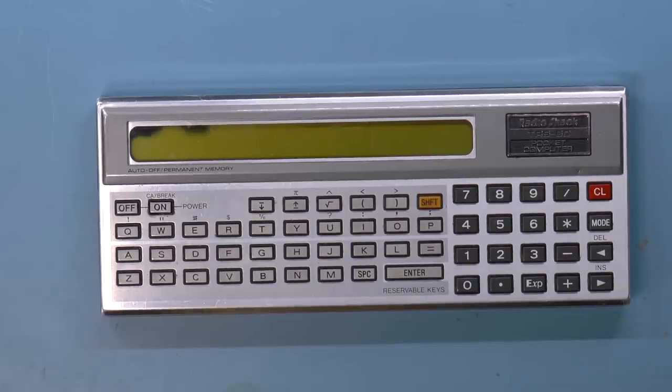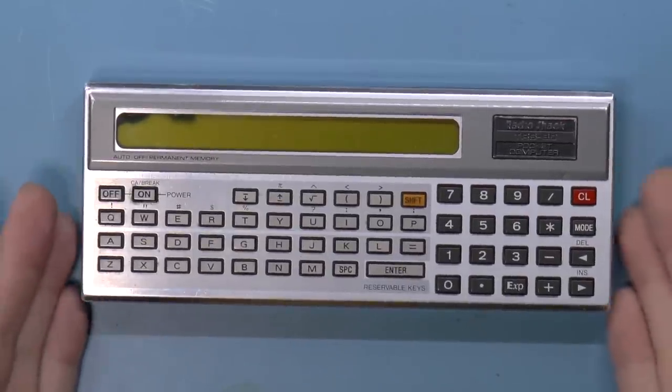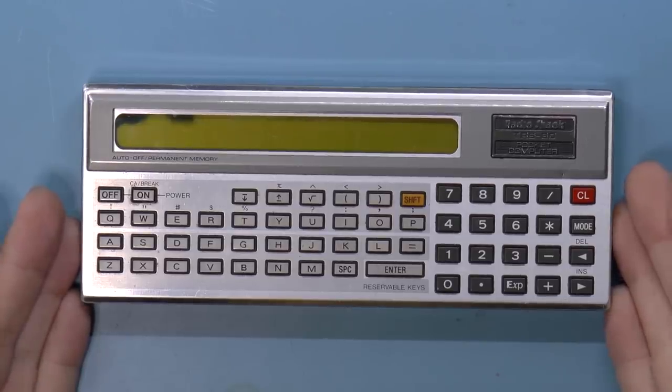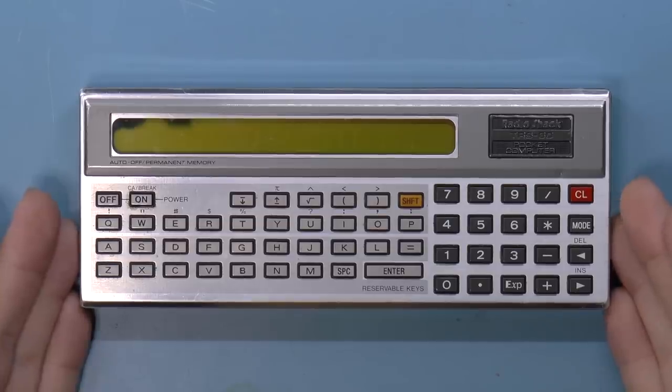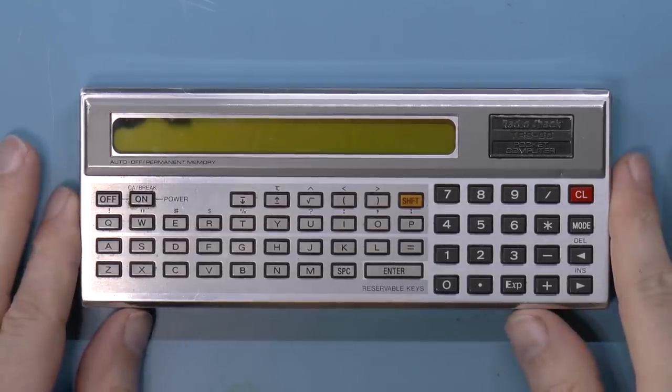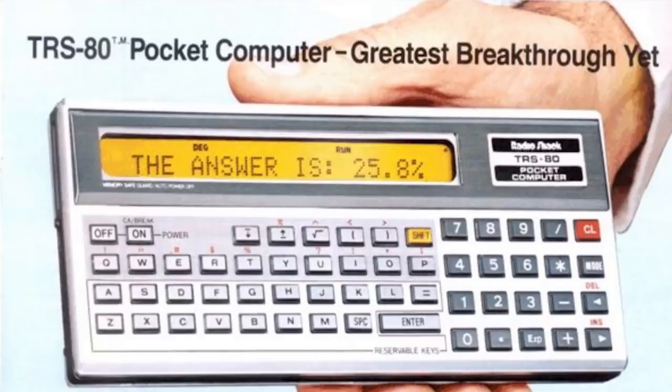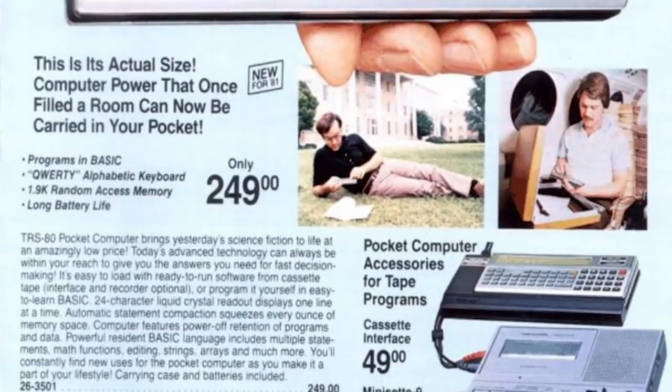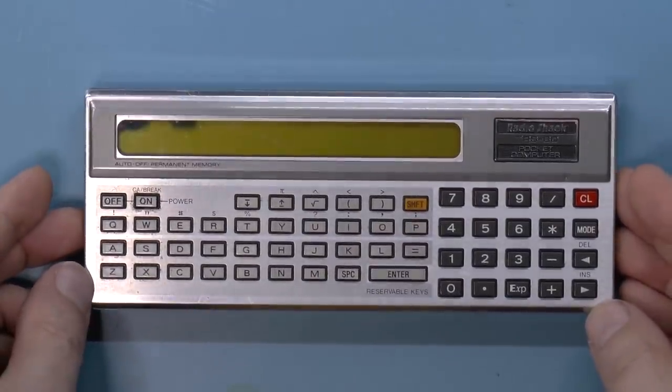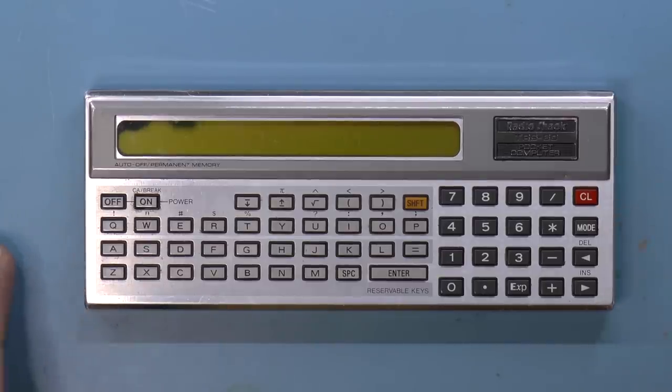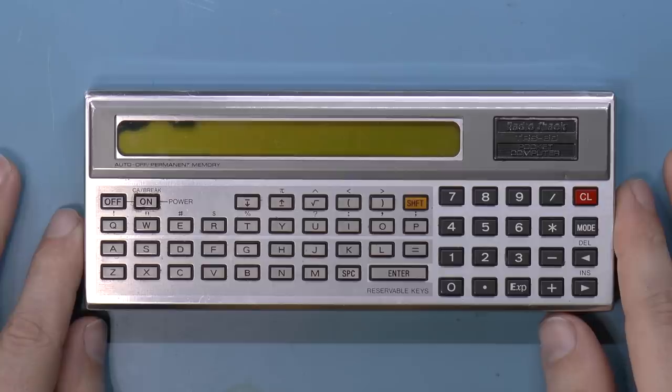Greetings retro computer friends. Today I have a TRS-80 model PC-1, the first pocket computer in the TRS-80 line. This sold in 1980 for $230 US and it is essentially a BASIC computer. By BASIC I mean the language BASIC. It is a computer that you could program in BASIC.